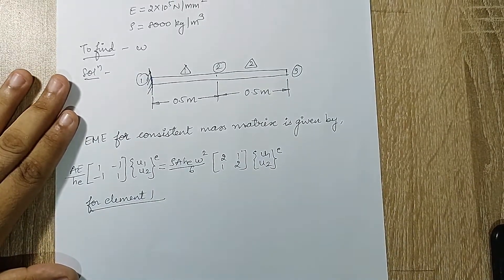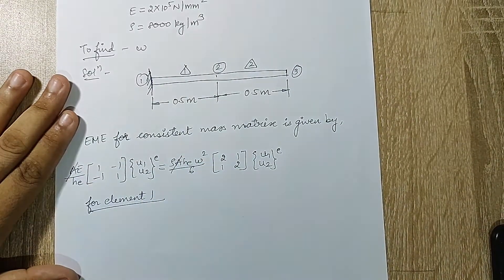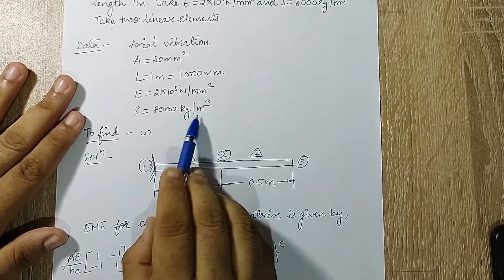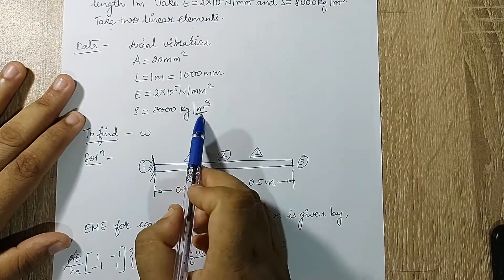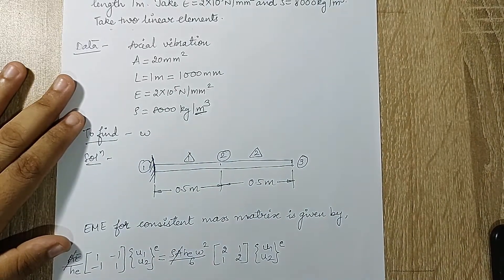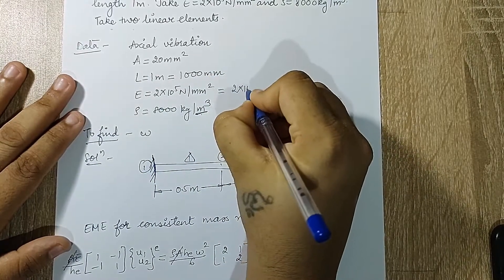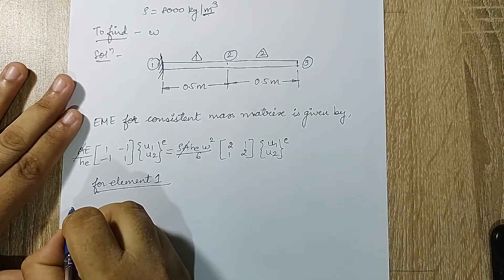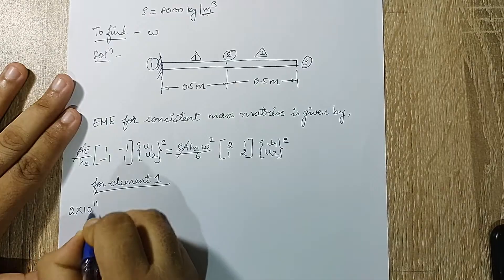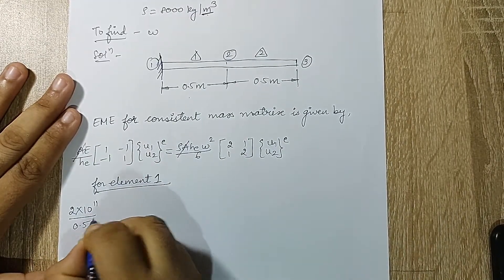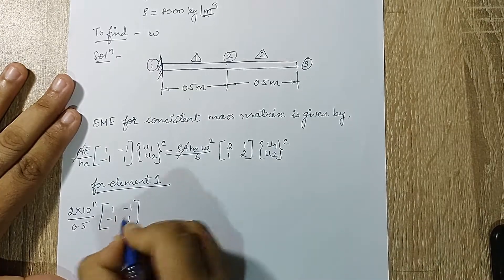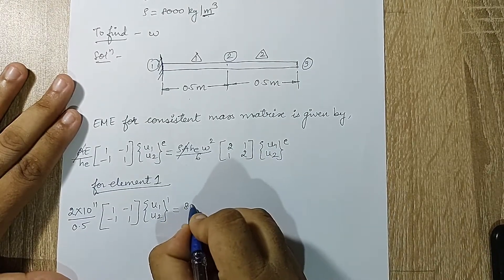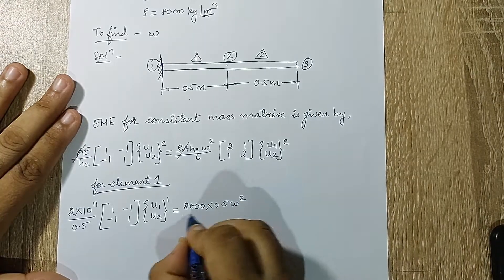Area cancels from both sides so we don't substitute it. Since the length is given in meters, we convert E to 2×10¹¹ N/m². Substituting E = 2×10¹¹, h₁ = 0.5 m for element 1, the stiffness matrix term is [1 -1; -1 1] with DOFs u1, u2. The mass matrix side uses ρ = 8000, h = 0.5, giving (ω²/6)[2 1; 1 2].